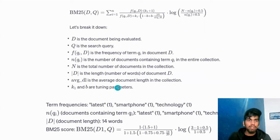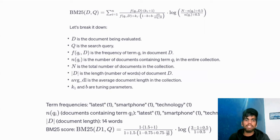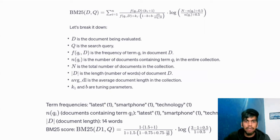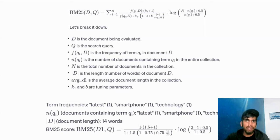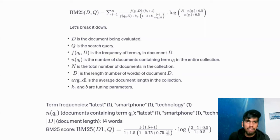And then we have two extra parameters, K and B, which are tuning parameters. Once you apply this formula, you break down all the keywords — the major keywords used in my document are 'latest smartphone technology'. You count the term frequency, that is the number of times it has been repeated, then check the document length, and calculate various other parameters to get the BM25 score. Based on this value, you rank your documents. This is what we mean by keyword retriever.